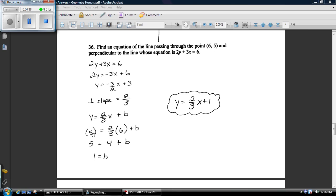This x and y are going to be filled in by that coordinate right there. So we get five equals two-thirds of six plus b. Two-thirds of six is four and four plus one is five. So b is one. And then all you do is take this slope because this means it's perpendicular to the original. And plug it in and boom, there's your line.